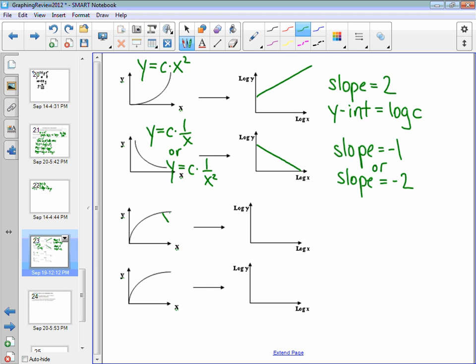Next, if you have a function that looks like this, y equals c times x to the 1 half power. Remember, 1 half is square root. What you will have is a graph that looks like this, a little bit flatter than the other one that's up there, and slope will be equal to 1 half, 0.5. Nothing surprising there. It's just following the same pattern.